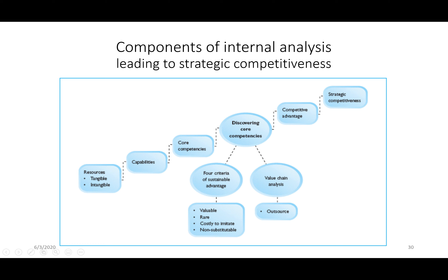Tangible resources are things like buildings, patents, and access to physical resources. Intangible resources are things like goodwill and intellectual property — knowledge of the organisation that isn't patented or registered. When these are combined in particular ways, that leads to capabilities. Different capabilities combined in different ways can develop a competency. A competency is something you do well.